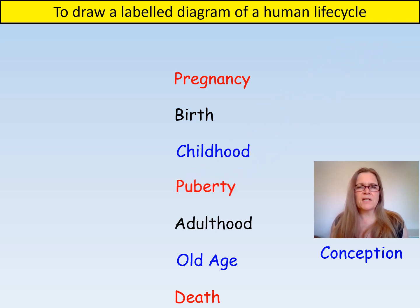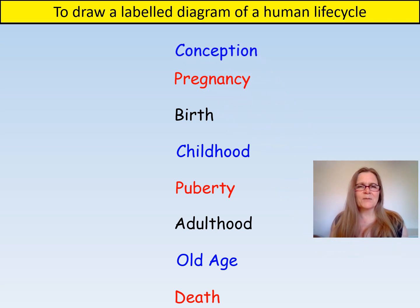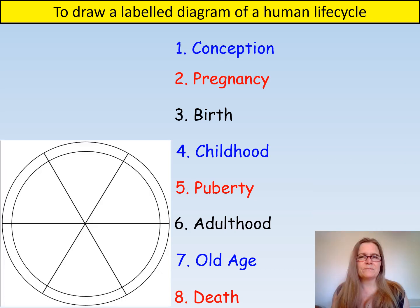Puberty can start any time from Year 5 until leaving secondary school. Finally, do you know where conception goes? That's right — right at the beginning. Human life starts with conception. Now that you've ordered the stages of the human life cycle, you could write them as headings on your diagram.